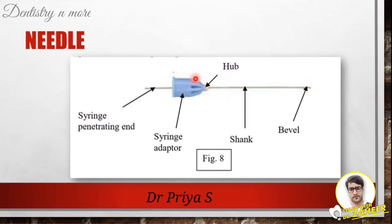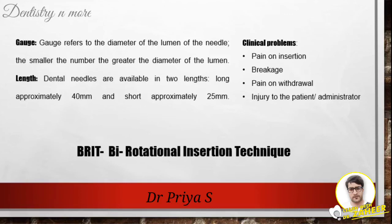The hub is a plastic or metal piece through which the needle attaches to the syringe. The syringe-penetrating end of the needle extends through the needle adapter and perforates the diaphragm of the local anesthetic cartridge. When needles are selected for a given injection technique, two factors must be considered.